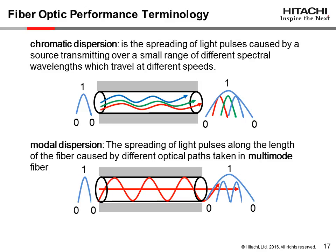Modal dispersion, depicted in the bottom graphic, is the spreading of light pulses along the length of a fiber caused by the different optical paths taken in a multimode fiber. For example, although the signal originated at a certain time, a light mode taking the shorter path through the center of the fiber will arrive sooner than the light mode taking the longer path bouncing back and forth within the core and the cladding. Both modes carry the same signal but arrive at different times, which broadens the pulse signal. Too much modal dispersion can result in transmission failures.